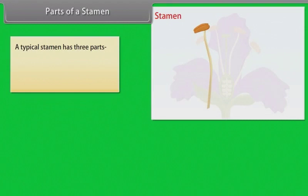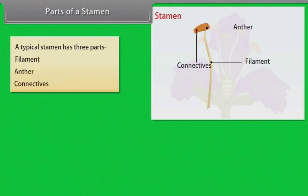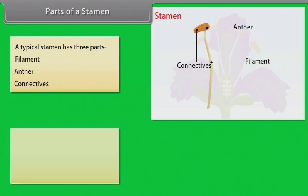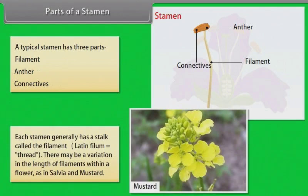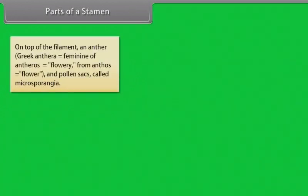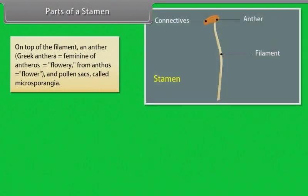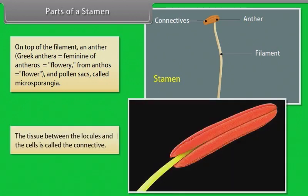A typical stamen has three parts: filament, anther, and connective. Each stamen generally has a stalk called filament. There may be variation in the length of filaments within a flower, as in Salvia and mustard. On top of the filament is an anther with pollen sacs called microsporangia. The tissue between the locules and the cells is called the connective.